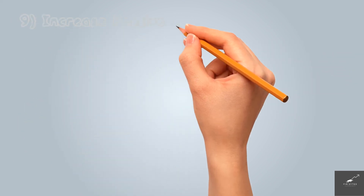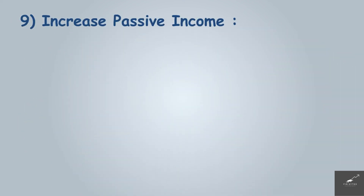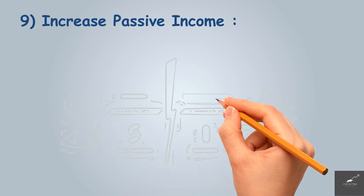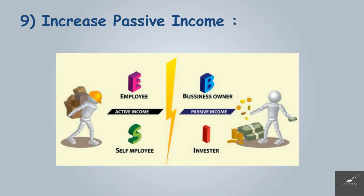Number nine: increase passive income. Instead of depending on a single source of income, we need to generate income from multiple sources such as dividends from stocks, regular income from bonds, rental yield, etc.